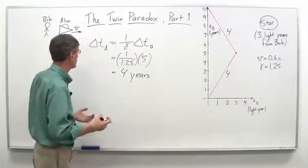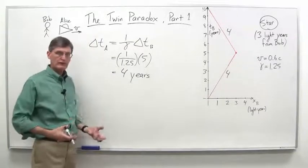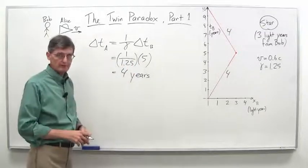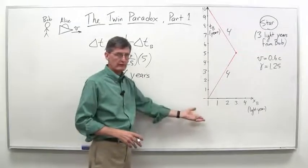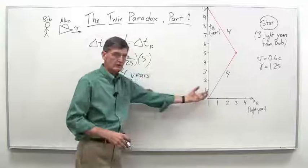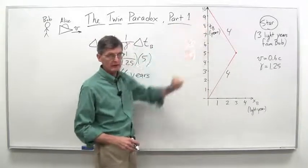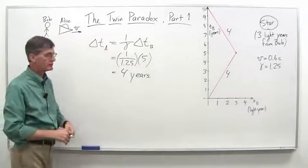In fact, let's think about that right now because you could say, well, let's just reverse the situation because in Alice's frame of reference, she sees Bob moving away from her. And we could draw a similar diagram like this for Alice, except Bob would travel over here this way in negative direction and then travel back to meet Alice again.